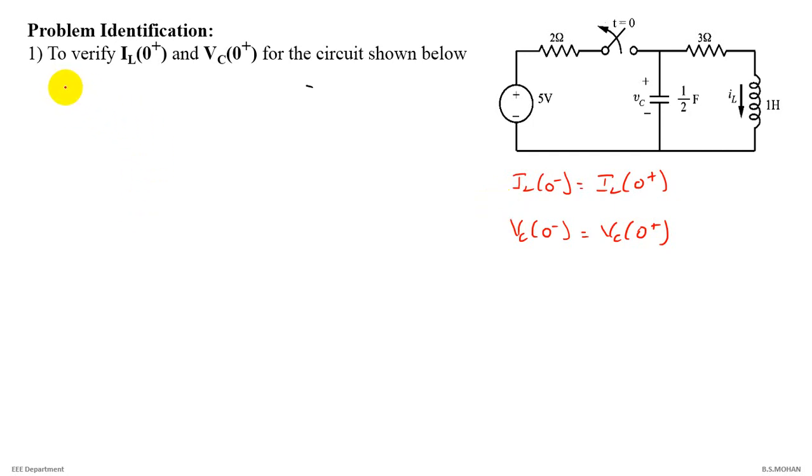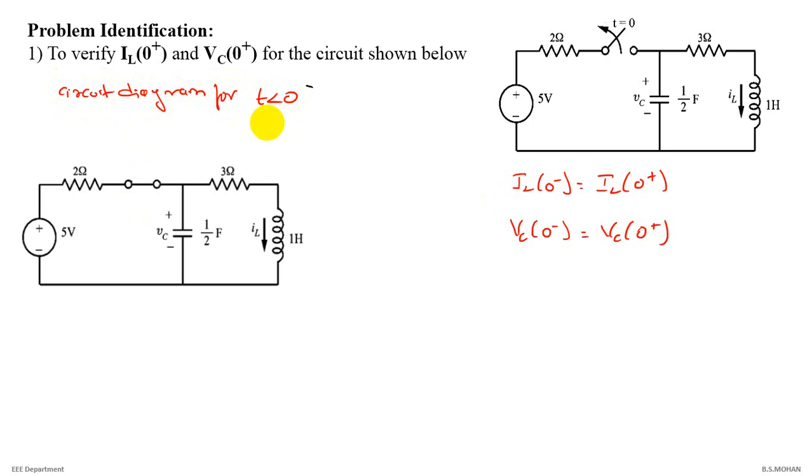Now here is your circuit diagram for t less than 0. We know that the switch is closed at t less than 0. How do we represent capacitance 1 by 2 Farad in ohms and how do we represent 1 Henry in ohms in a DC circuit? In a DC circuit, frequency is 0. Capacitance C counter to XC appears as infinite, thus it is open-circuited. Similarly inductance, when we convert L to XL, XL appears 0, thus it is short-circuited.